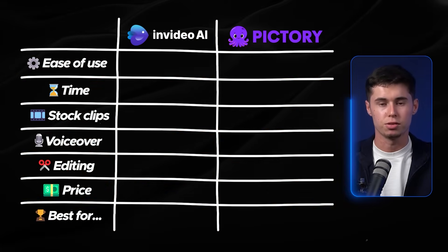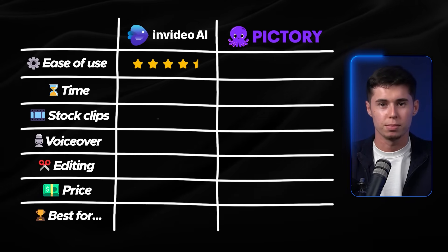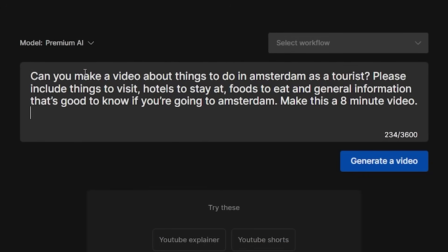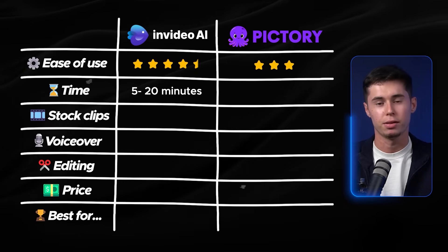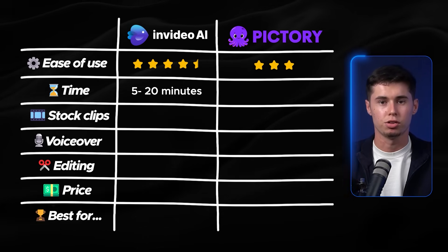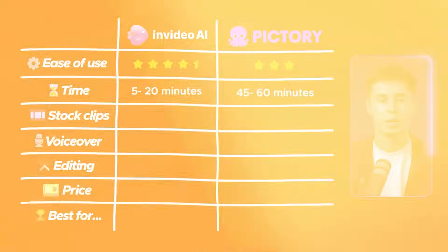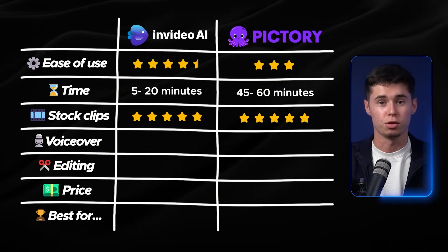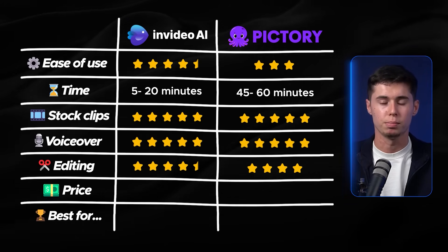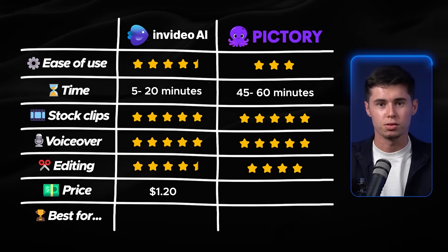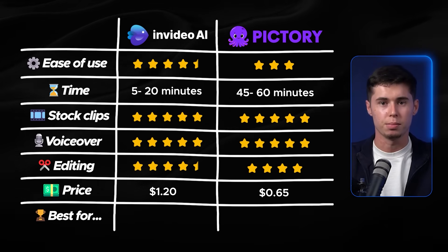Part four: the final verdict. For ease of use, InVideo AI scores 4.5 out of 5, Pictory just 3 out of 5 — because you still need to write the script yourself, paste it in, and change your scenes manually. For time to create one video, InVideo AI takes 5 to 20 minutes; Pictory can take up to an hour since you change all scenes manually. Stock footage and voiceover quality are both 5 out of 5 for each tool. Editing: InVideo 4.5, Pictory 4. Price per video: InVideo $1.20, Pictory $0.65 — but the cheaper option doesn't come with the better features.